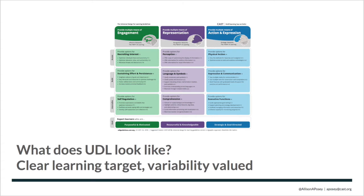At CAST, we get asked this question all the time: what does UDL look like? In less than 70 words, I'm going to tell you what you will see in any UDL environment. First, you will see a clear learning target — learners know what the goal is, the goal is the center and focus. Variability is valued through the way that we design our environment, thinking about engagement, representation, and action and expression. Focusing on some subtle language — we're thinking about choice and autonomy, authenticity and relevance, fostering collaboration, and holding learners to high expectations.